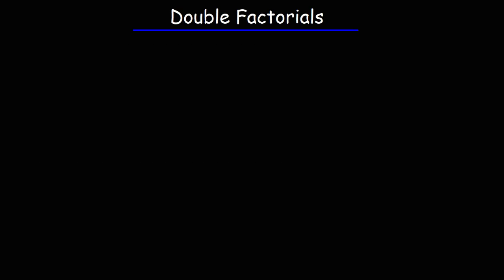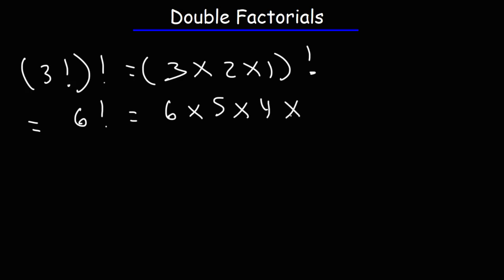Let me show you how to calculate an iterated factorial. Let's say if we have 3 factorial, factorial. 3 factorial is 3 times 2 times 1. Then we need to take the factorial of that value. 3 times 2 times 1 is 6. So we need to calculate 6 factorial, which is 6 times 5 times 4 times 3 times 2 times 1.